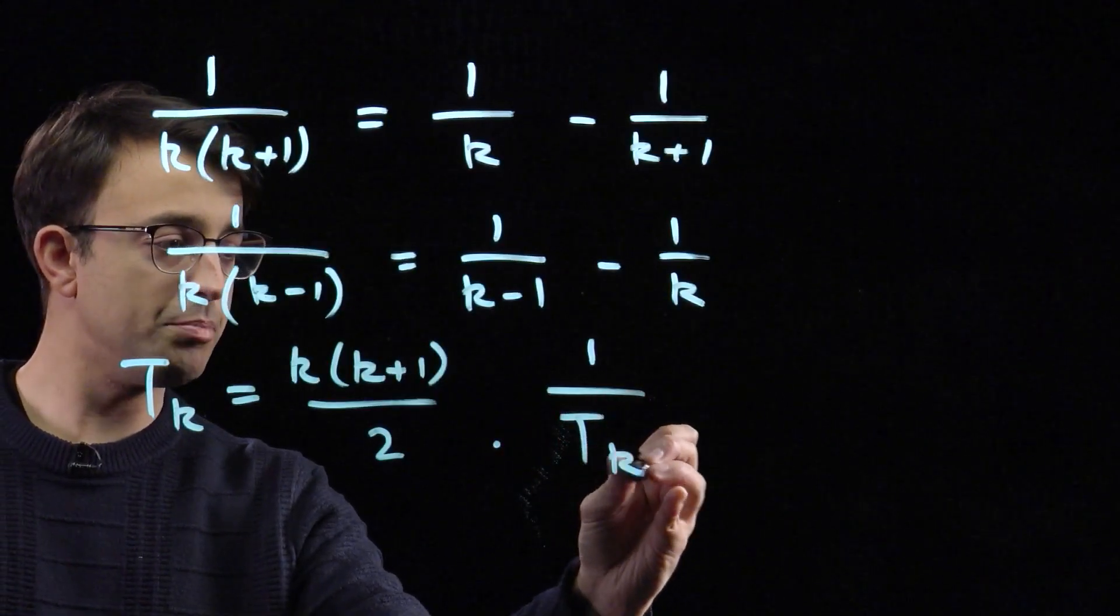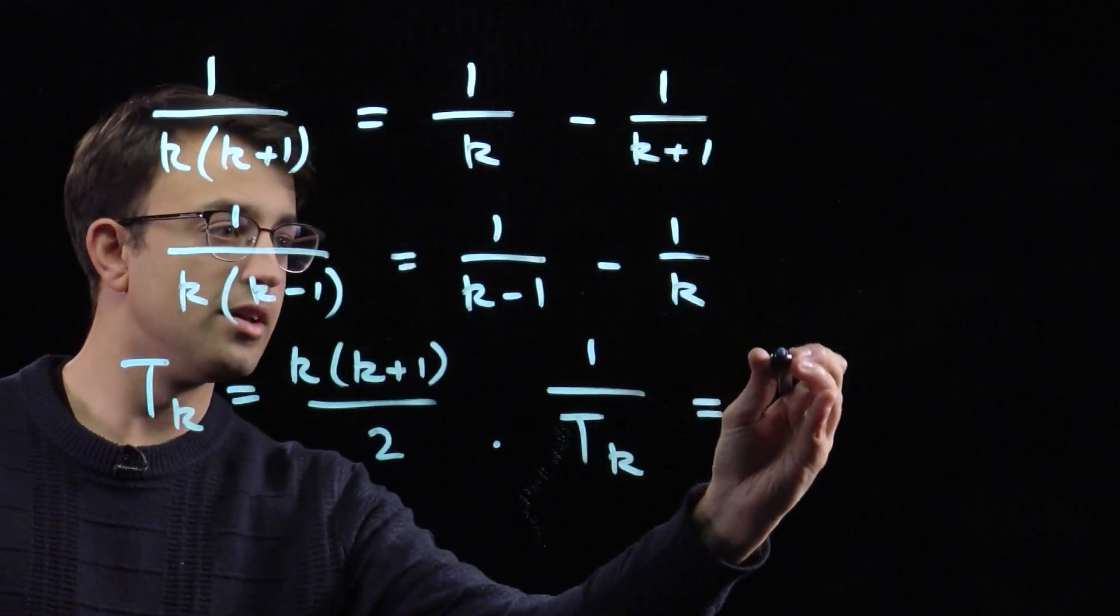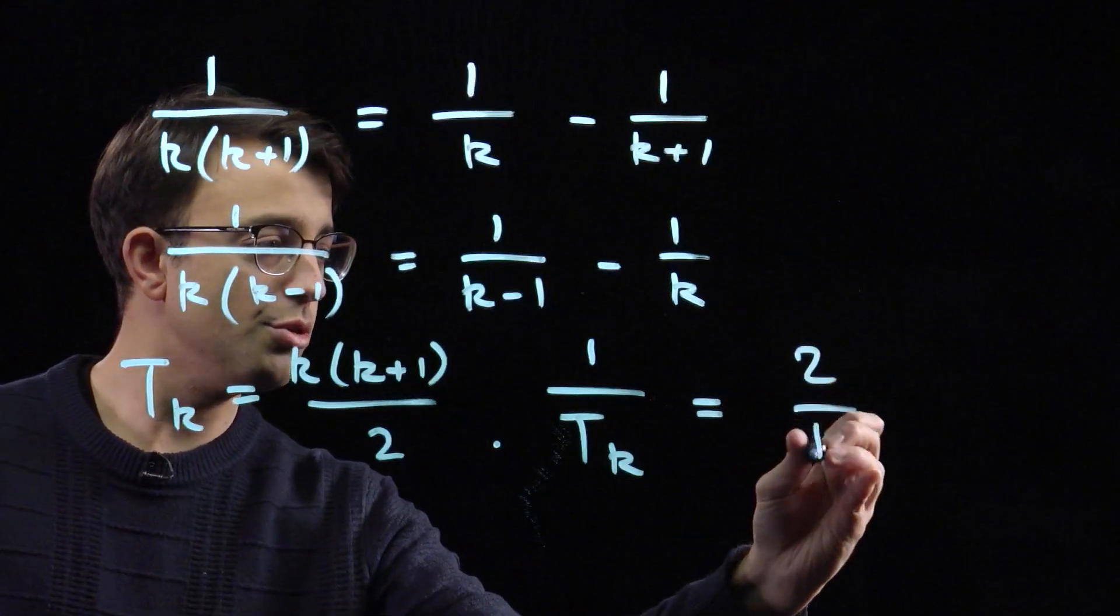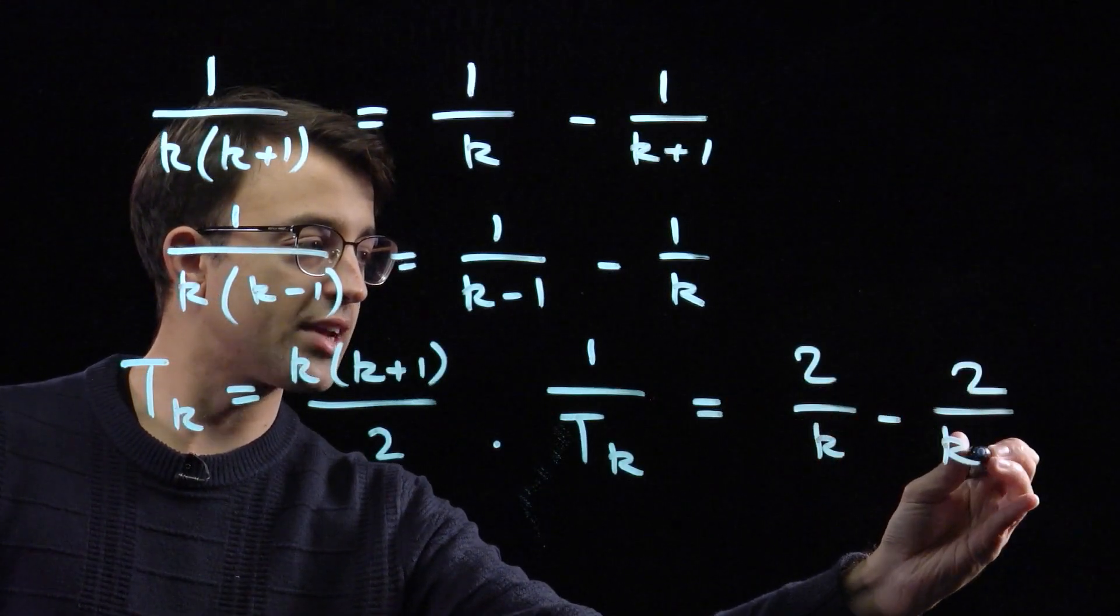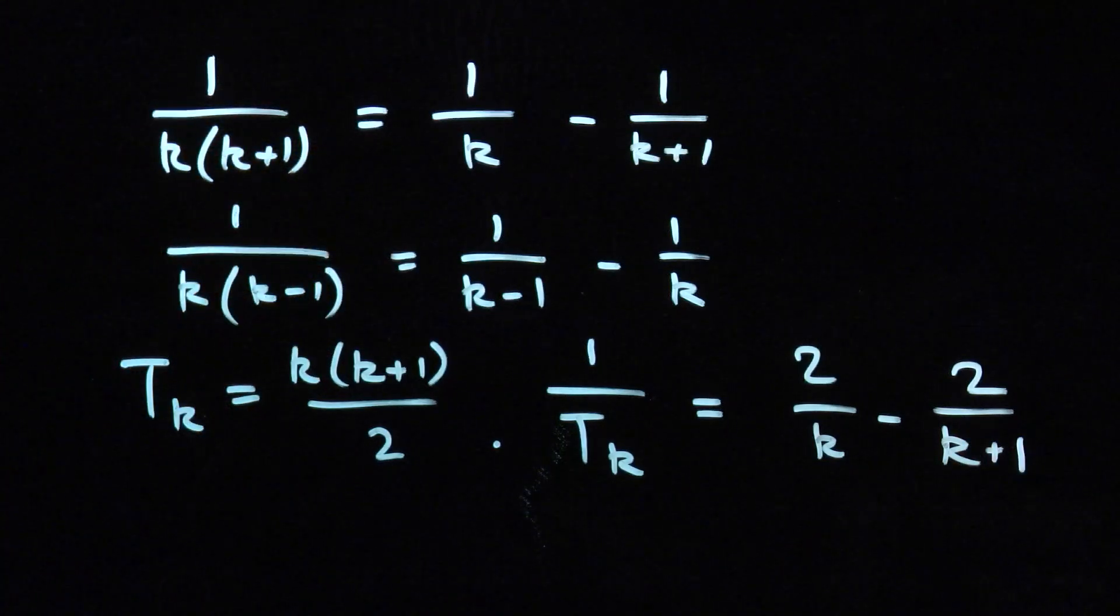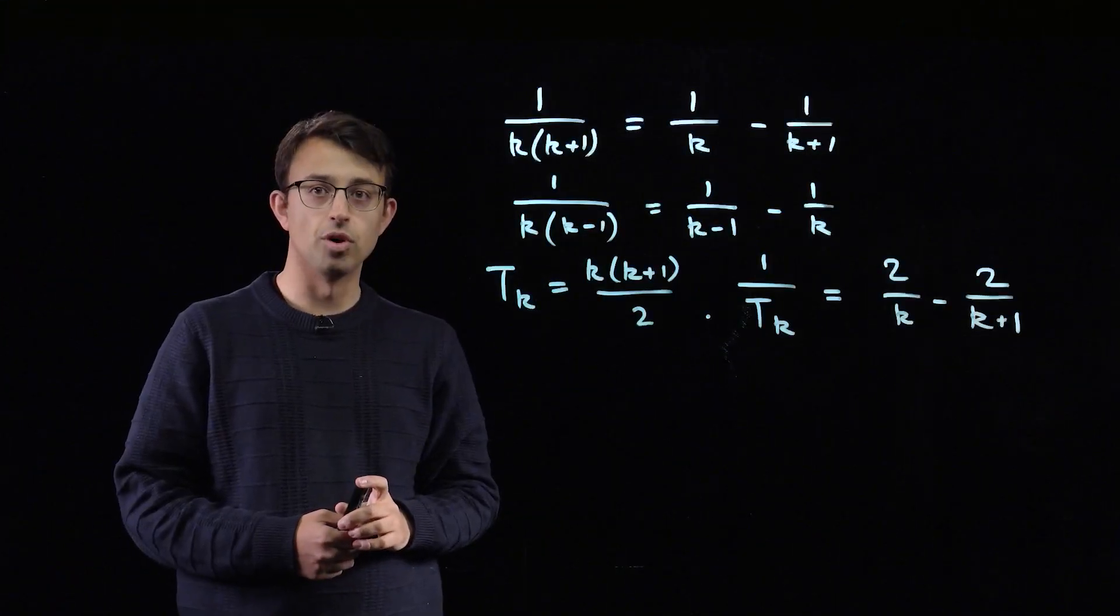This means that the reciprocal of tk can be written as 2 over k minus 2 over k plus 1. And this is going to be useful in what follows.